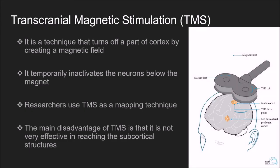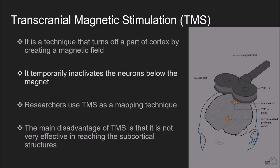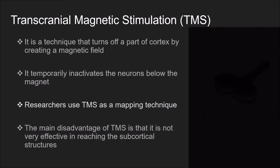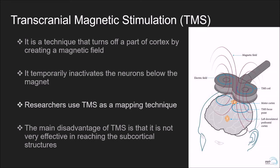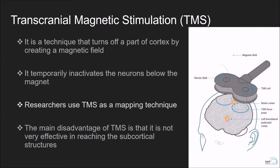Transcranial magnetic stimulation or TMS is a technique that turns off a part of the cortex by creating a magnetic field, temporarily inactivating the neurons below the magnet. Researchers use TMS as a mapping technique. For instance, when a TMS coil is placed on the motor cortex and different regions along this cortical strip are stimulated, muscle movements and twitches are observed on the contralateral side of the body. From this, it can be observed how different body parts map onto different parts of the cortex and how much cortex is devoted to any particular body part.